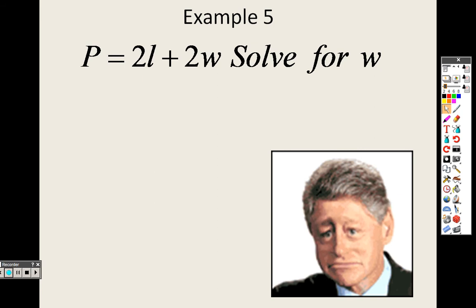Let's solve this for w. When we're doing this, when we're trying to solve for w, you want to make sure that you can get w all by itself. So in order to get w by itself, I'm going to need to move this 2l. And since it's a positive 2l, I'm going to subtract 2l on both sides.